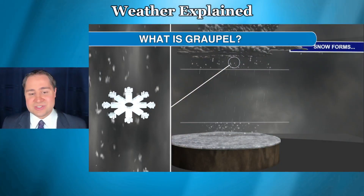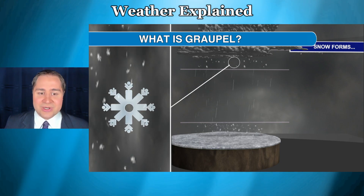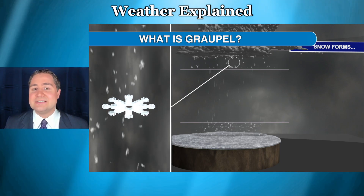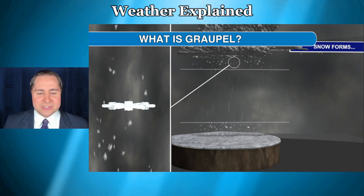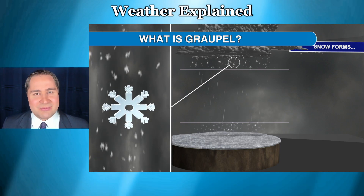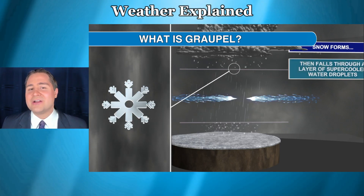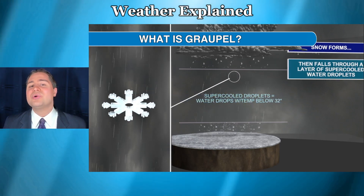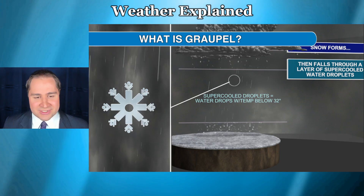So what is graupel? Well, graupel actually starts out as snow — so that's the first ingredient you need. You need snow to be falling. But something special has to happen to this snow: it has to fall through a layer of super-cooled water droplets.